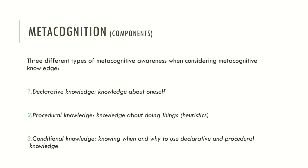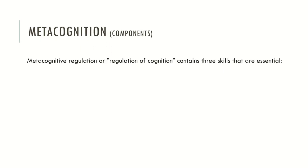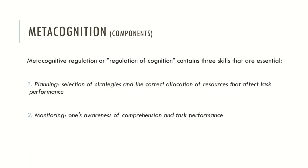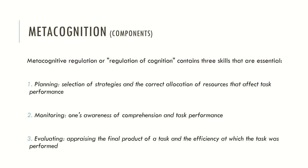Metacognitive regulation, or regulation of cognition, may also contain three skills. Planning: selection of strategies to correct the allocation of resources that affect task performance. Monitoring: one's awareness of comprehension and task performance — the ongoing awareness about the products we are performing within a given task. And evaluation: appraising the final product of a task and the efficacy resulting from the performance given in certain tasks.